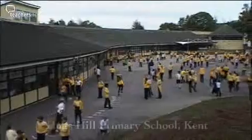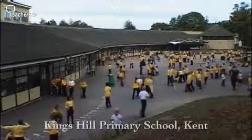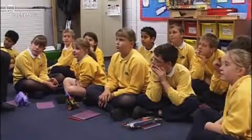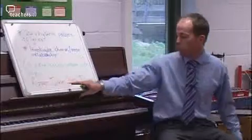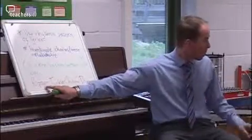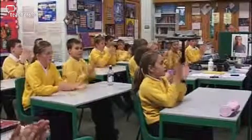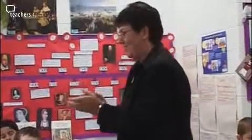Pupils at the top end of Key Stage 2 need to build on basic musical skills learnt in the earlier years to become confident performers and composers. In this programme we see a Year 6 class during two music lessons which form the early part of a unit of work on composing songs. In the first lesson they use words to compose rhythmic phrases, and in the second they transfer these onto percussion and add a beat. Music advisor Helen McGregor will be observing and taking part in the lessons.